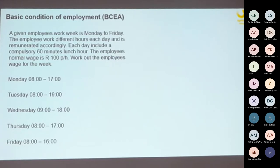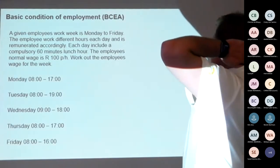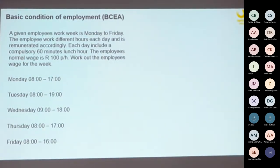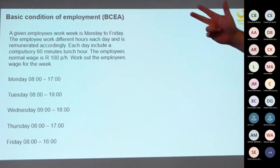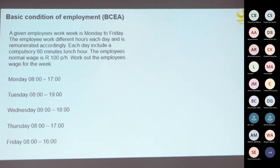Here's an example. The employee's work week is Monday to Friday — five days — remunerated accordingly, with a 60-minute lunch hour. The employee's normal wage is R100 per hour. Three key provisions apply: 45-hour normal time work week; maximum nine hours normal time per day; and not more than 12 hours per day — meaning a maximum of three hours overtime.